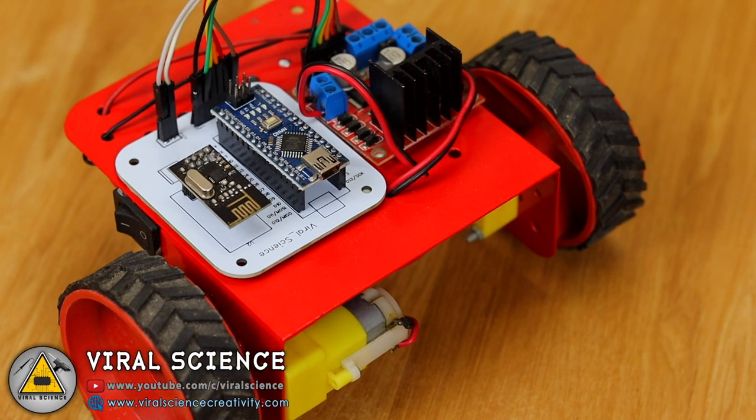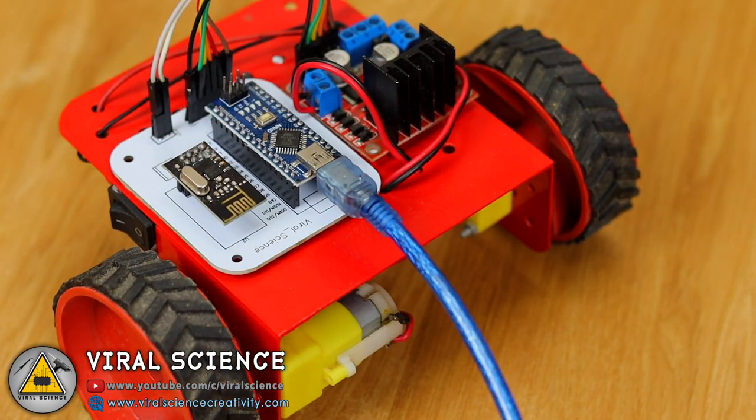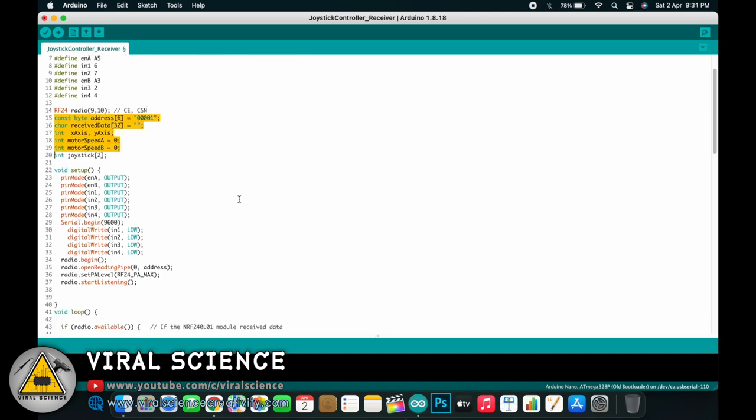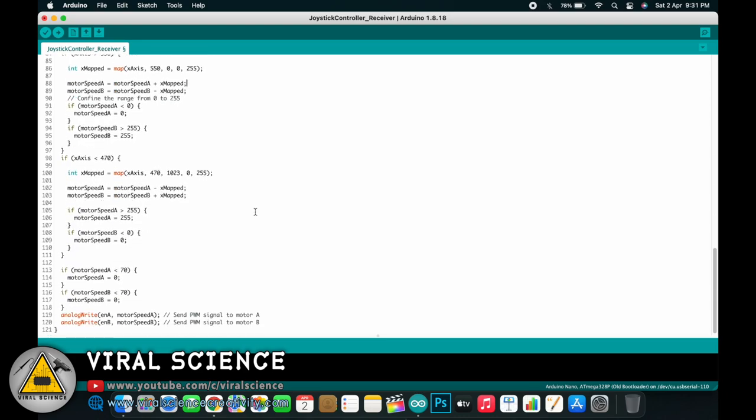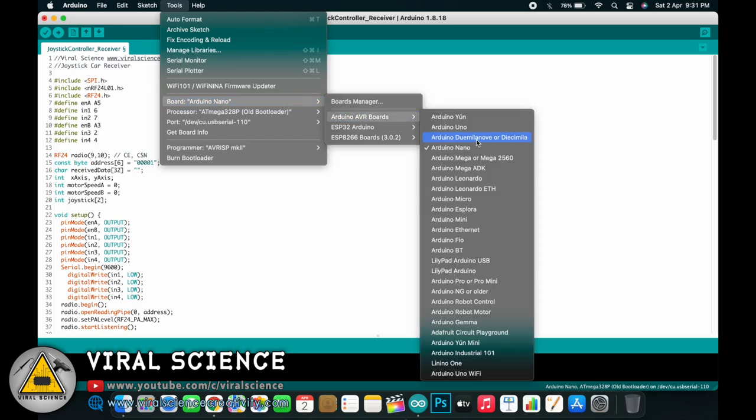So after completing the connections of our receiver section we'll program the Arduino board. So open the code of the receiver. So here is the code, here also we are using the NRF24L01 library and these are the pins which are connected to the L298N motor driver module. Here we have defined the CE and CSN pin of our transceiver module, the pin 9 and the pin 10. And here is the complete code so you just need to select the board, select the port and upload the code.